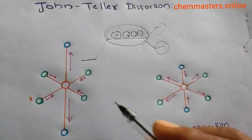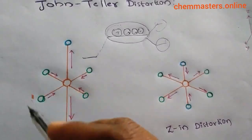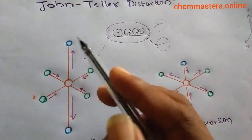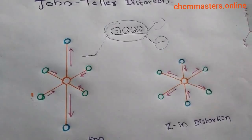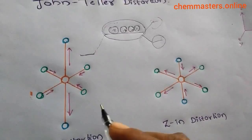By using Jahn-Teller Distortion, we can predict the geometries of many transition metals which have deviations from normal octahedral positions. In another way, we can say that the Jahn-Teller Distortion Theorem states that molecules or ions which have a degenerate ground state will distort to remove that degeneracy.